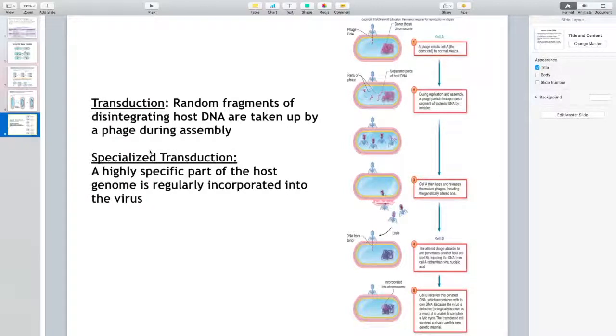However, we are more interested in medical science in understanding the specialized transduction. And what is that? How is that different from the general transduction or generalized transduction? Because in this event, a highly specific part of the host genome is regularly incorporated into the virus, and then it's carried on to the new recipient. In most cases, these are genes for drug resistance or genes for toxin production. So, you can understand the impact that this will have on the recipient bacteria once it has acquired that genes.